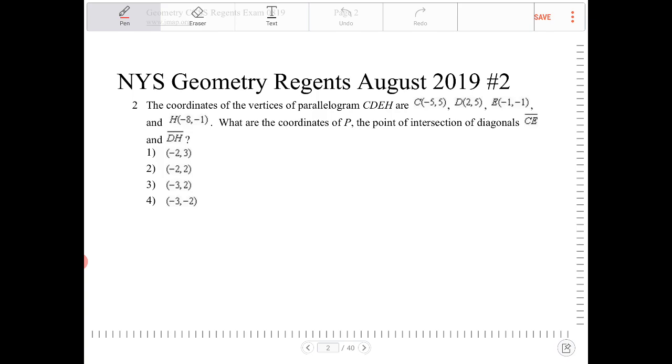So notice that CDEH is a parallelogram, and because they're telling you that it's a parallelogram, we're going to take their word for it. But what has to be true about the intersections of CE and DH is the intersection is going to be the midpoints of both line segments.